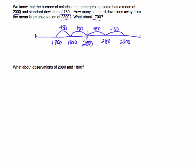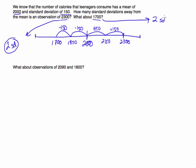So the question is, how many standard deviations away from the mean is an observation of 2,300? The answer to that would be 2 — you would be 2 standard deviations away. Because looking here, here's 2,300: I am plus 150, plus 150, that is a value of 2 standard deviations away. For 1,700, notice if I subtract 150, subtract another 150, that is also 2 standard deviations away.